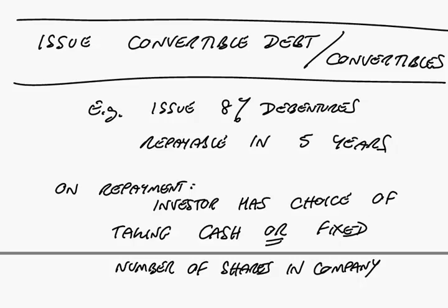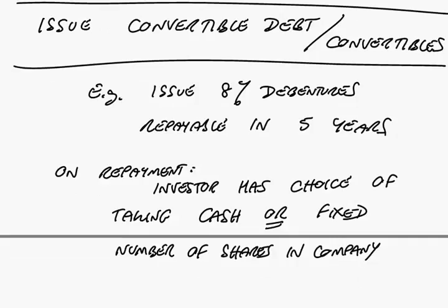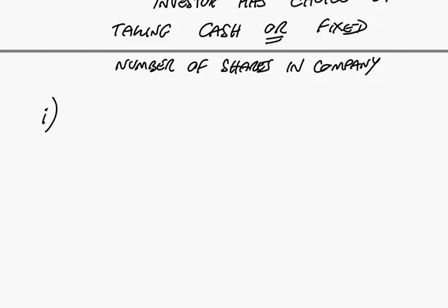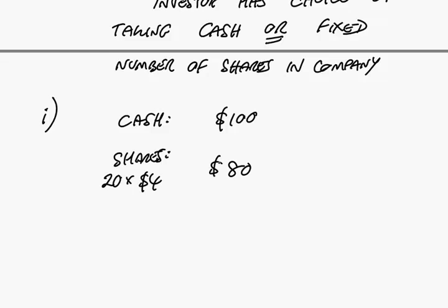Well, the answer should be obvious. Remember, it's the investor's choice. In 2010 they'll get a letter saying it's time for repayment — what would you rather do? In case one, the choice is: you either take cash of 100, or you take shares. You were told you'd be entitled to 20 shares. In case one, the shares are worth $4. You'd be a complete idiot if you didn't take cash. You'll take cash.